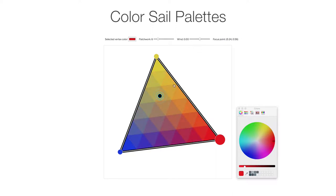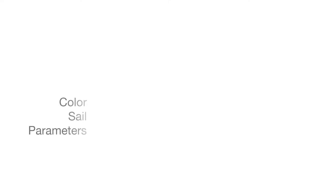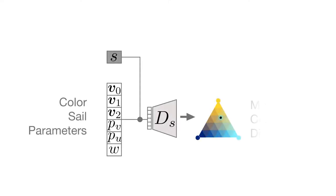It is also possible to focus on a particular part of the gradient using a focus point parameter. Just like discrete palettes, this representation has many applications, but its representative power opens up many new possibilities. We propose a way to construct a mapping from these simple parameters to all the colors represented by a color sail in a fully differentiable manner.